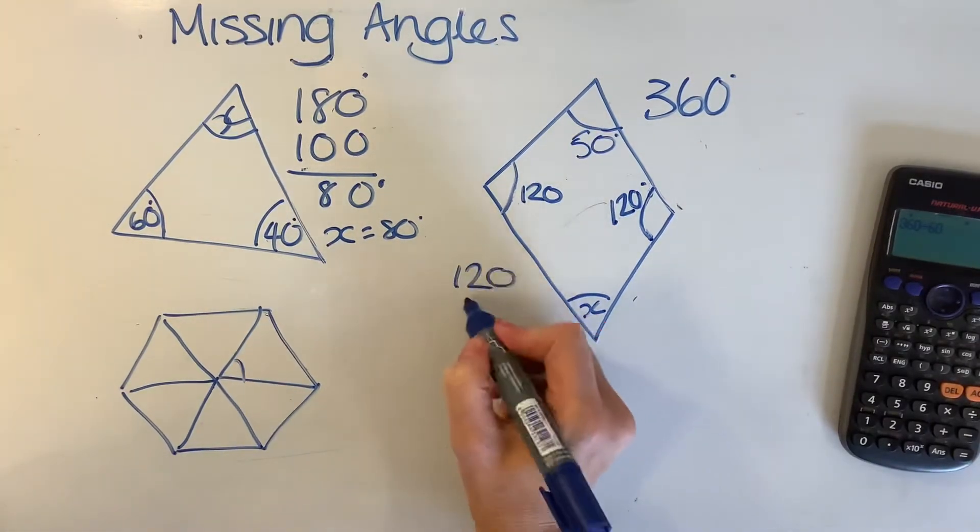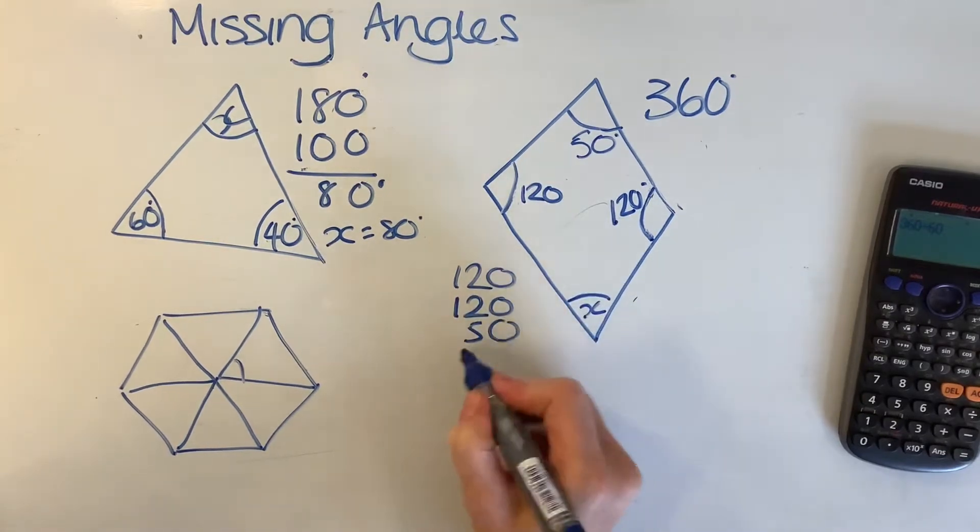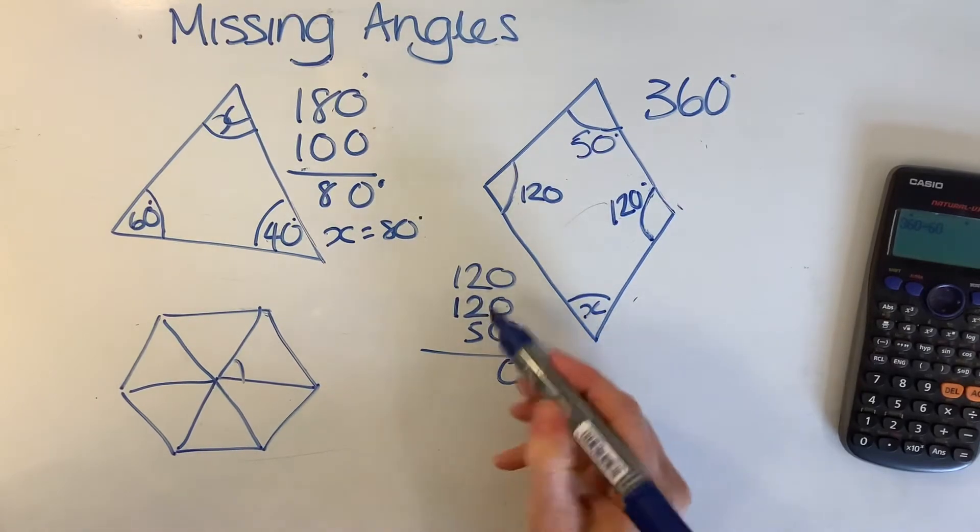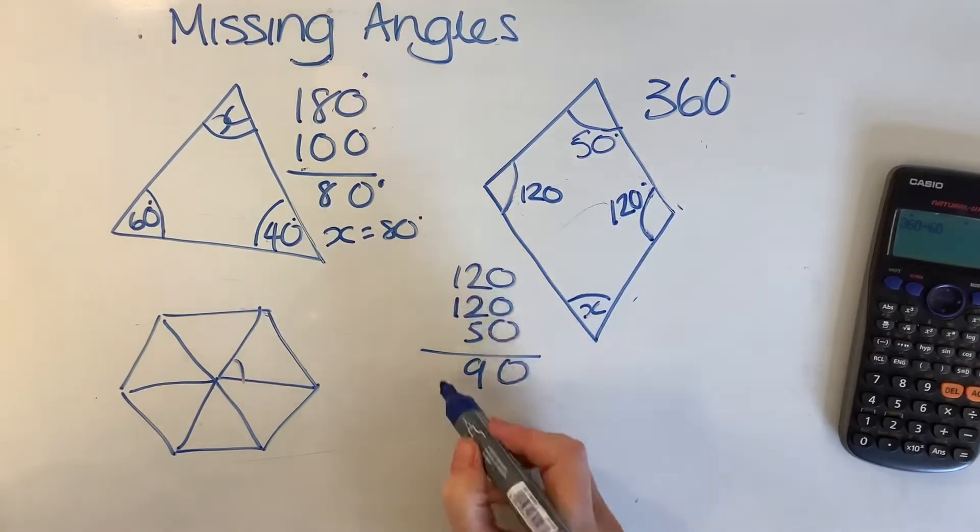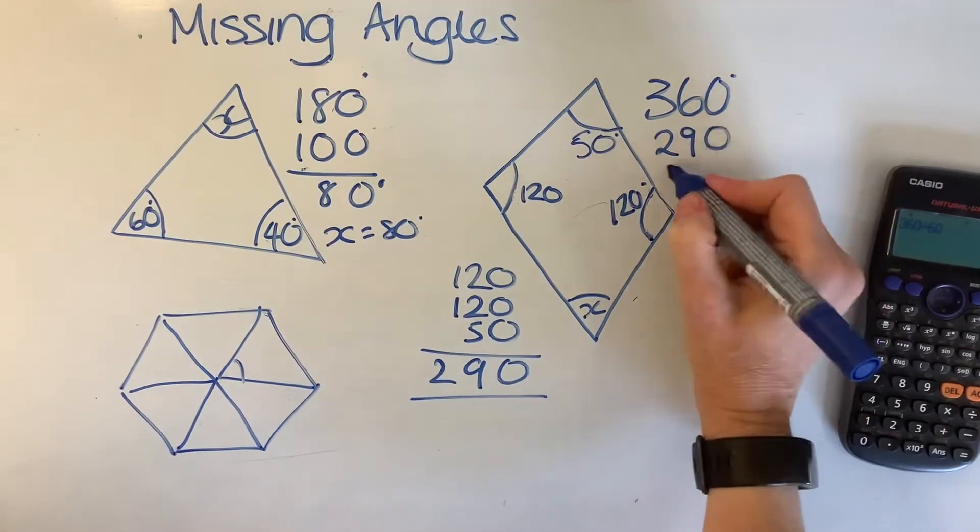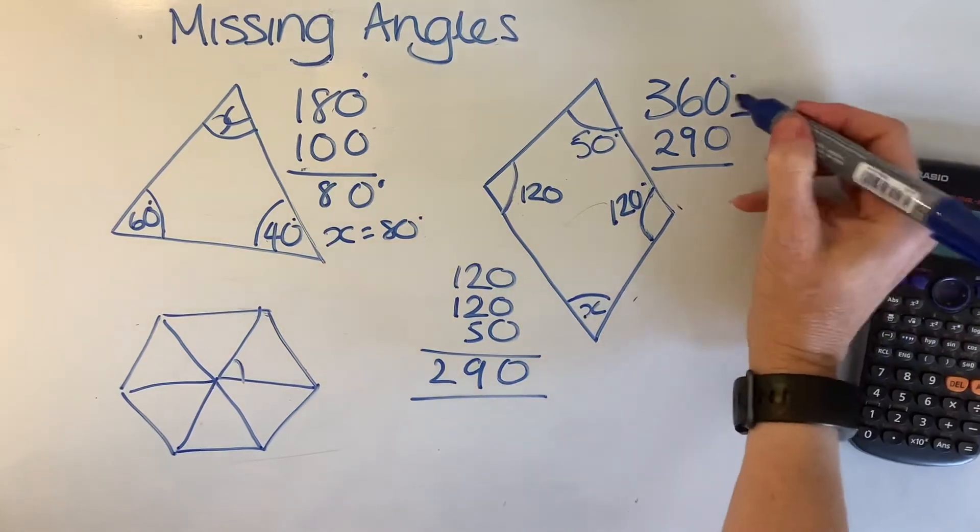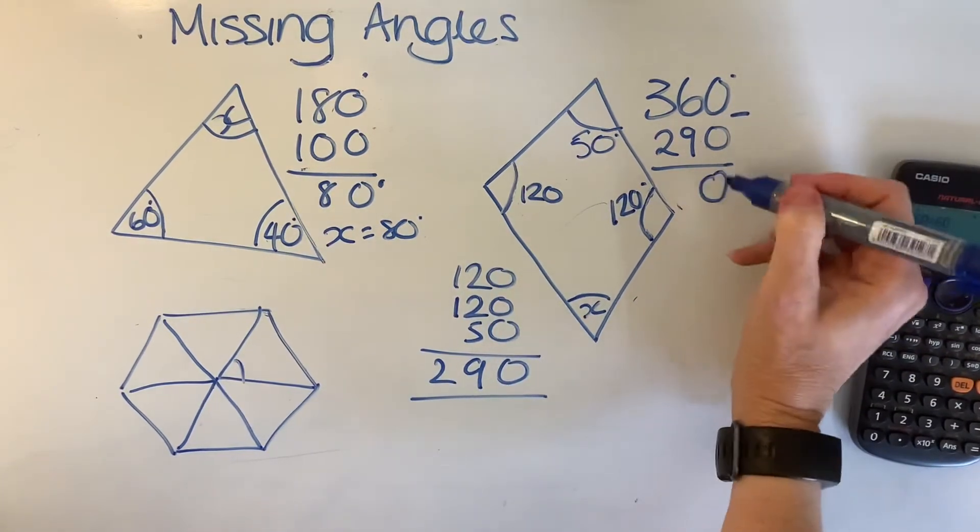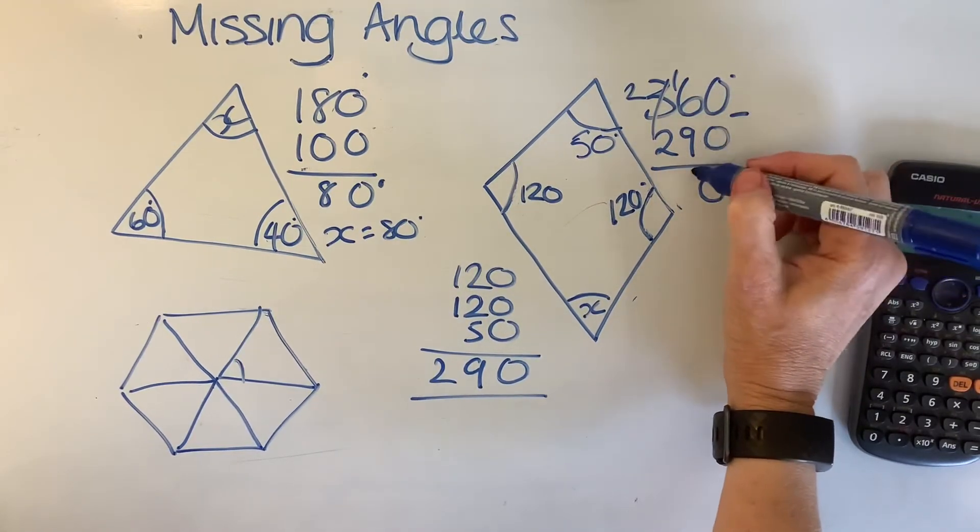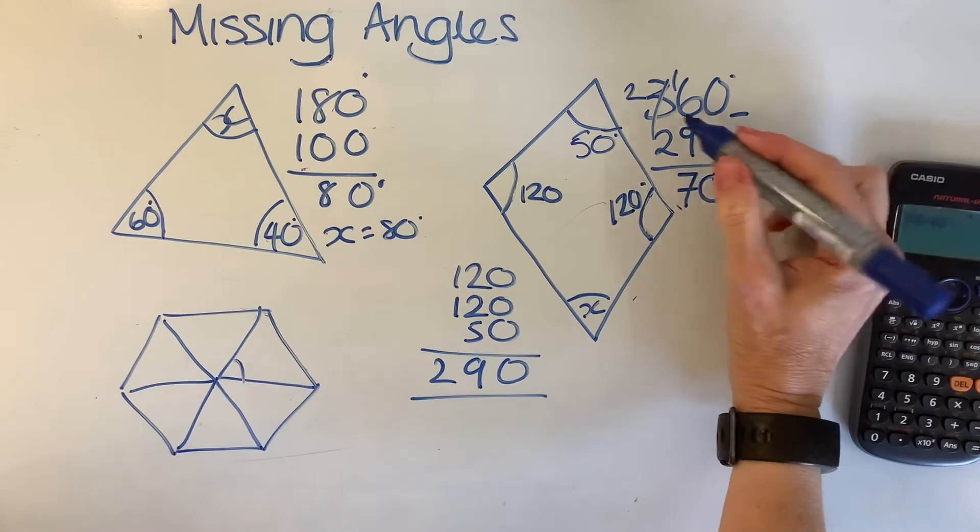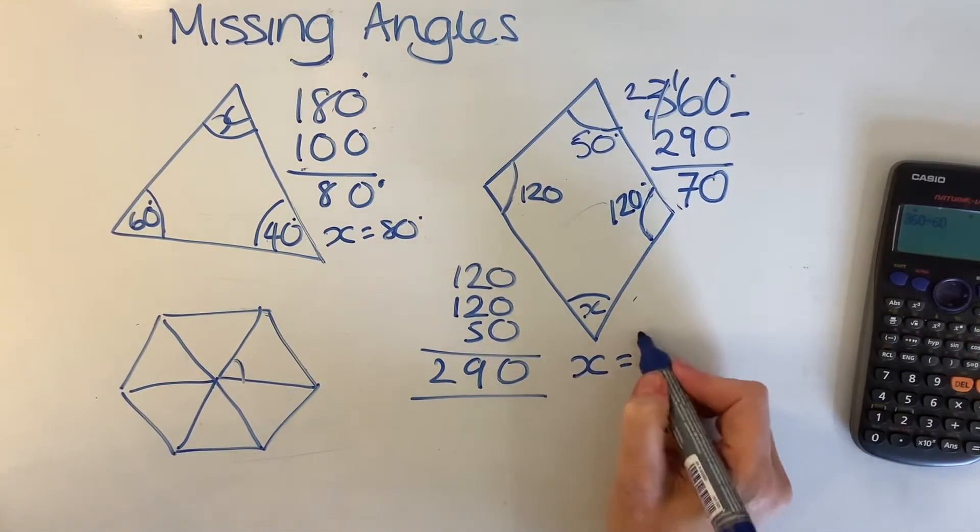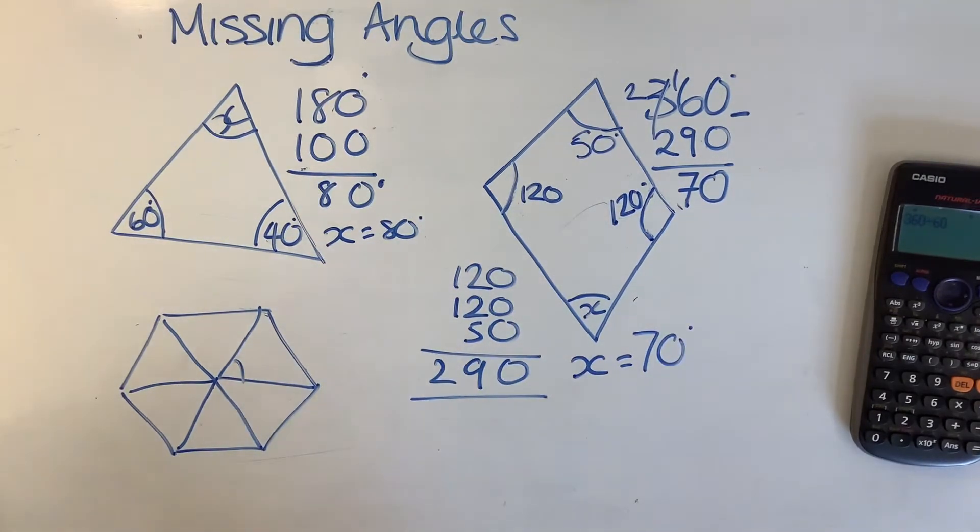So I'll do it here. I've got 120, 120, add 50. So that's 290. So then I'm going to do 360 take away 290. 0 take away 0 is 0. 6 take away 9, I can't do. Borrow. 16 take away 9 is 7. 2 take away 2, 0. So we know that here X will equal 70 degrees. Simple enough, yeah?